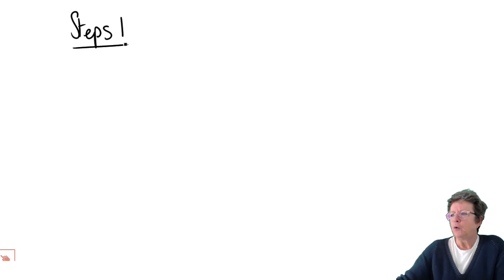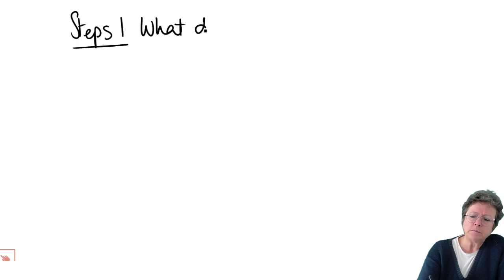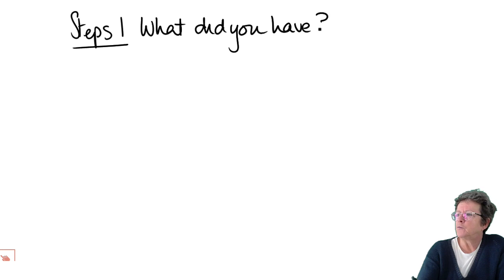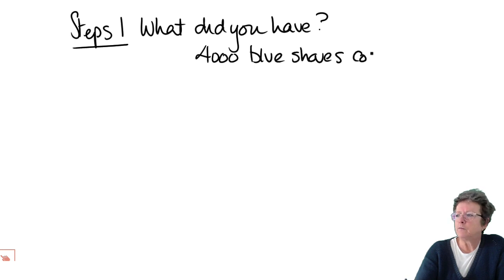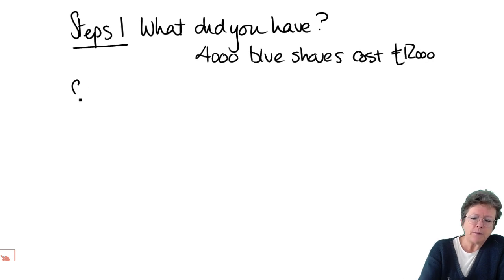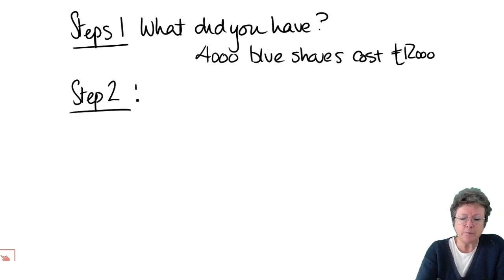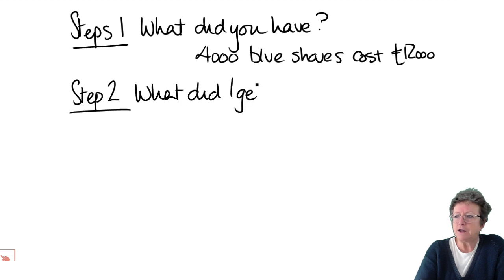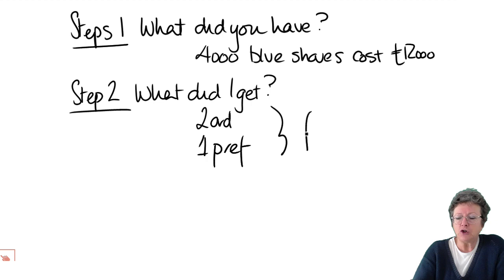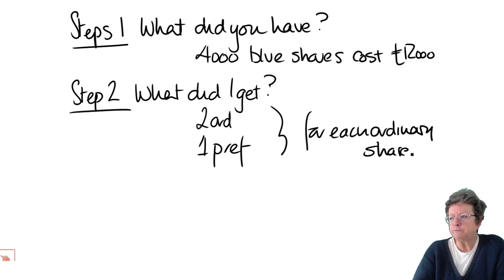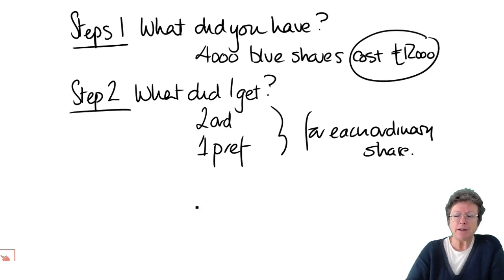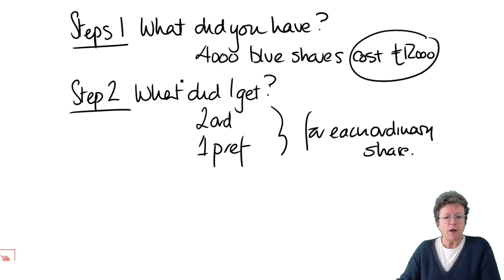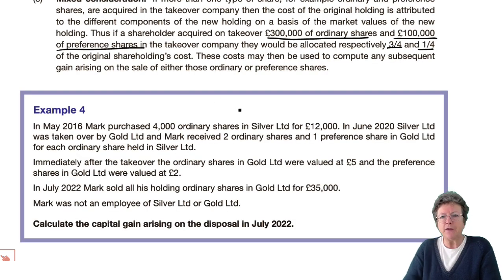Step number one: what did you have? For example, I had 4,000 blue shares and they cost me £12,000. Step two — and these are the questions you need to ask yourself — what did I get in the takeover? Maybe you got two ordinary shares and one preference share for each ordinary share. The question will tell you clearly what you've got. This cost now needs to be allocated between the various shares according to the instructions we have.